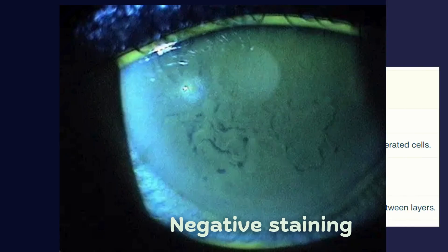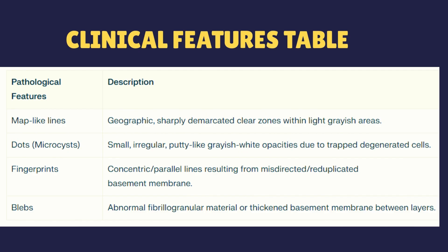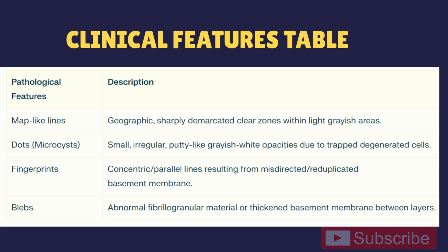To quickly summarize the four features: MAPs are a grayish geographical pattern; dots are small putty-like opacities from degenerated cells; fingerprints are parallel concentric basement membrane lines; and blebs are mound-like, less common opacities. Together, these features give EBMD its characteristic appearance — that is why we call it Cogan's MAP dot fingerprint dystrophy.